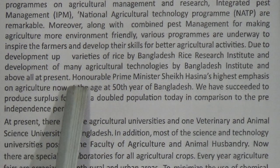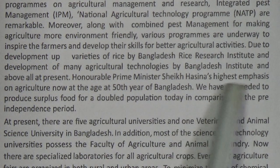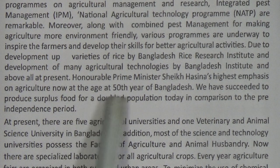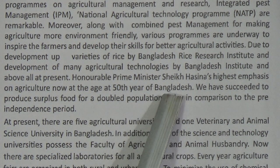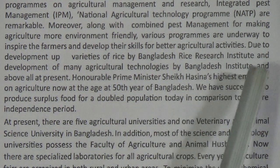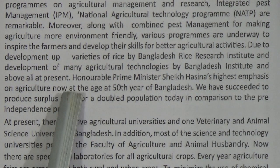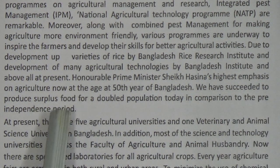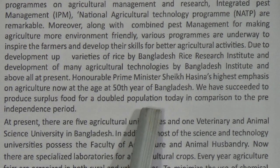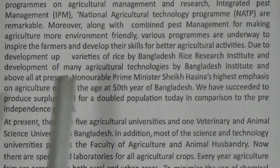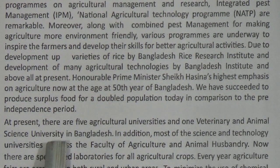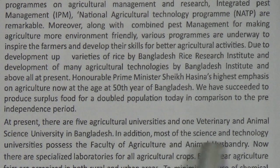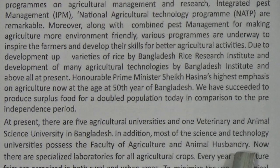At present, Honorable Prime Minister Sheikh Hasina is emphasizing agriculture. Now, at the 50th year of Bangladesh's independence, we have succeeded in producing surplus food for double the population compared to the pre-independence period. There are currently five agriculture universities and one veterinary and animal science university in Bangladesh. In addition, most science and technology universities have faculties of agriculture and animal husbandry.